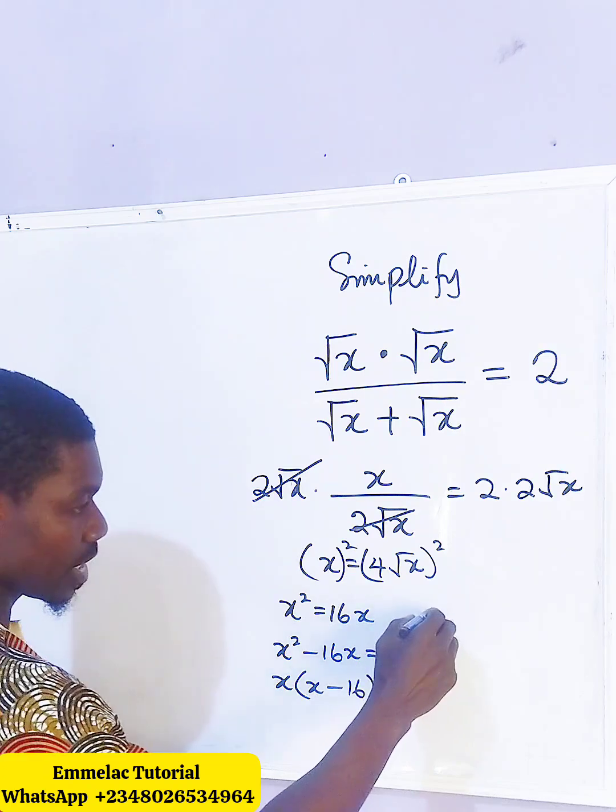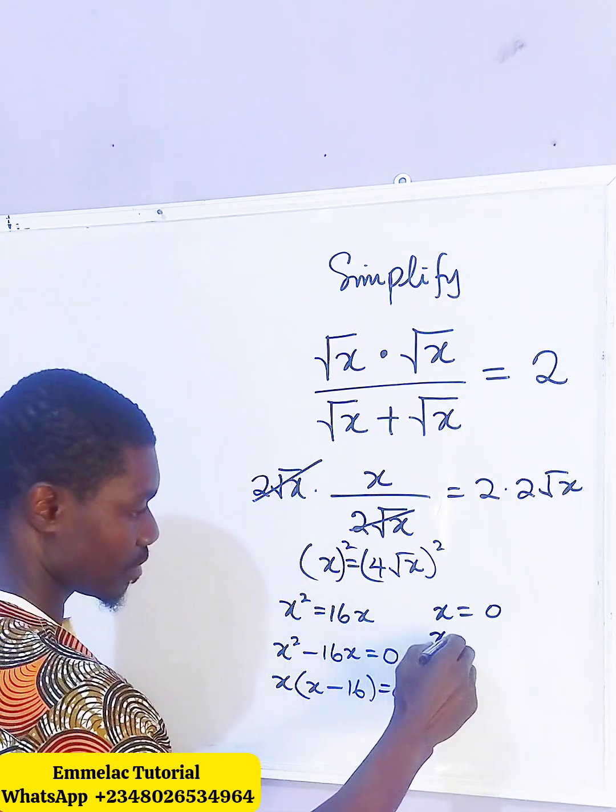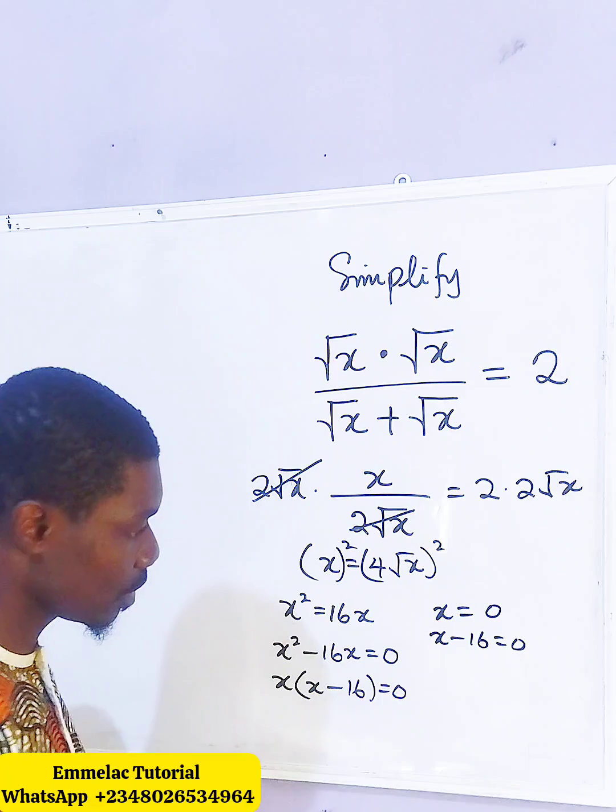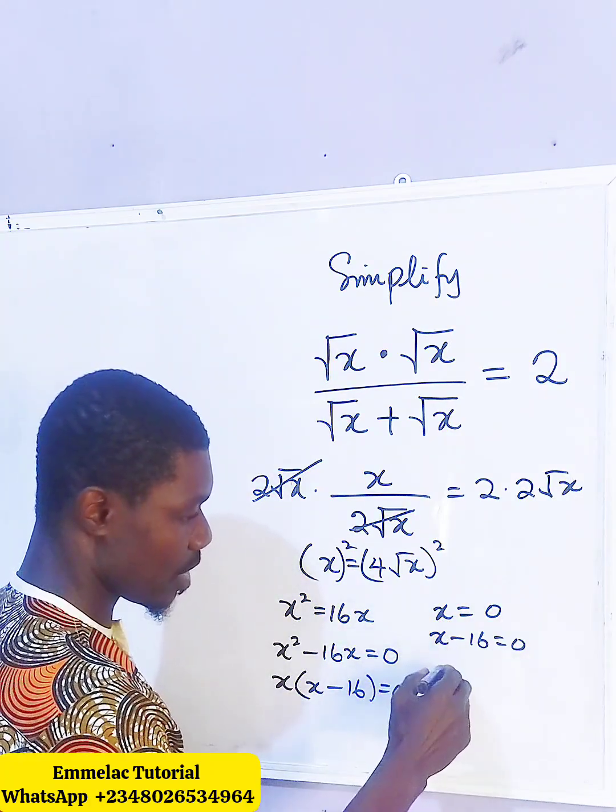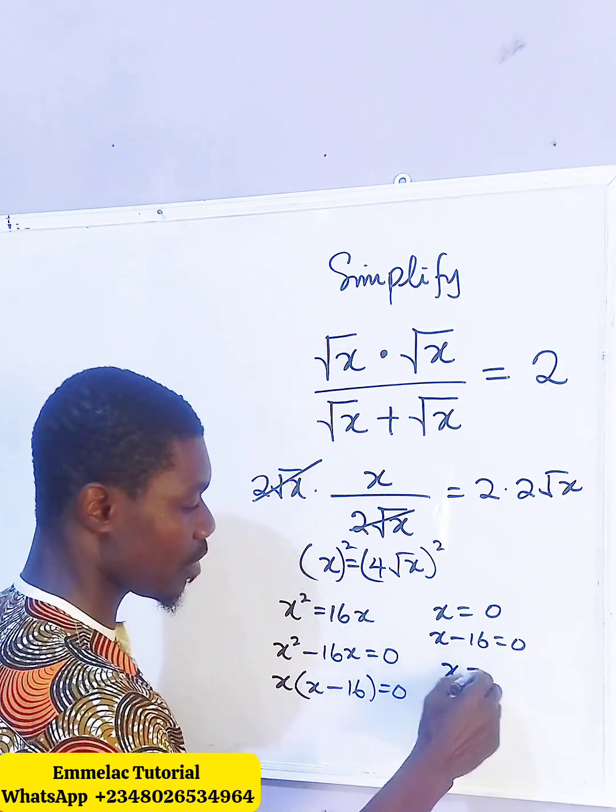Since the two terms are equal to zero, this means that it's either x equals zero and x minus 16 equals zero or both of them are zero. So at this point x equals zero and here we have x, adding 16 to both sides of the equation, and then x here becomes 16.